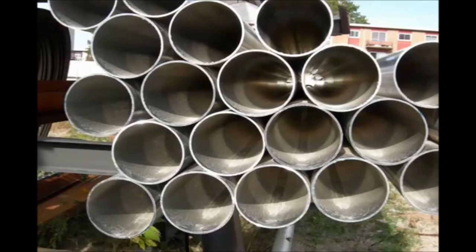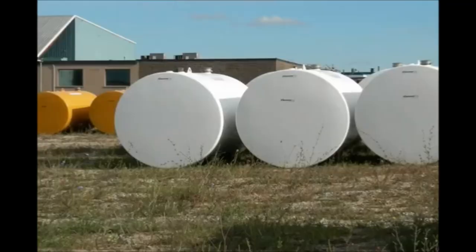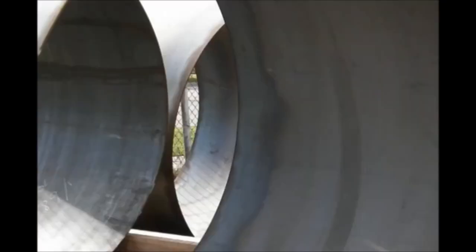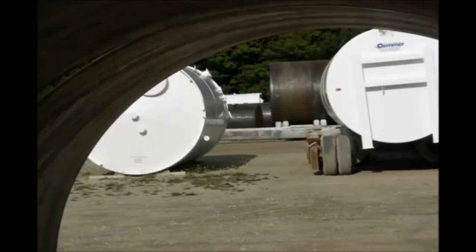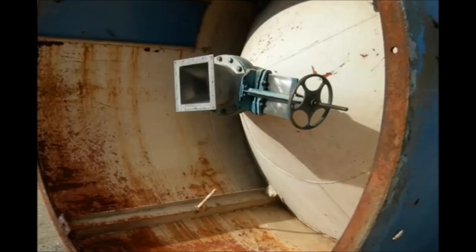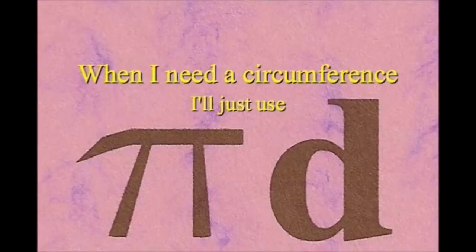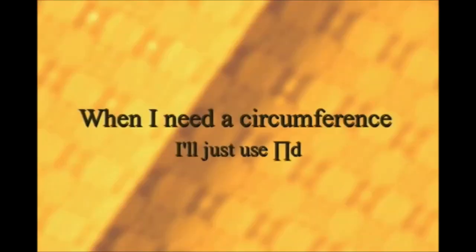And its diameter's a line that goes from side to side while passing through the center, now isn't that simple. Pi r squared sounds like area to me, when I need a circumference, I'll just use pi d.